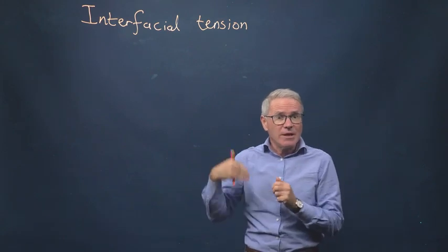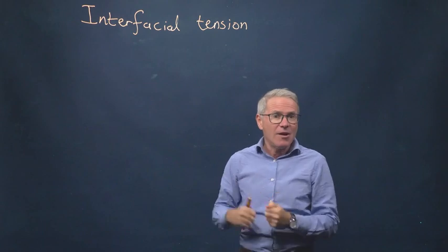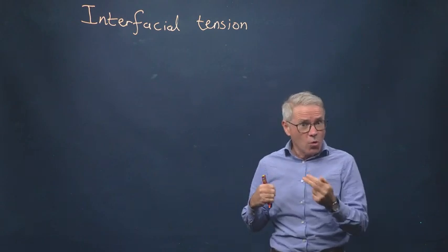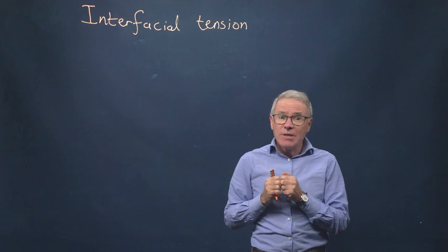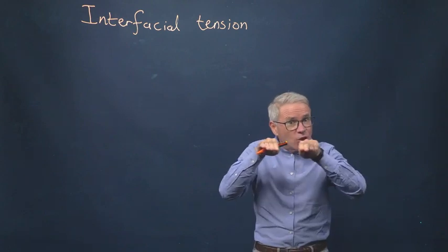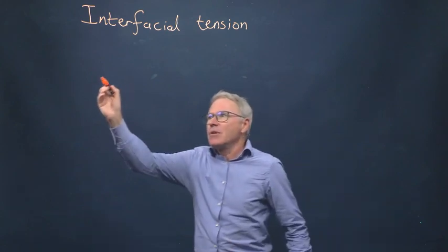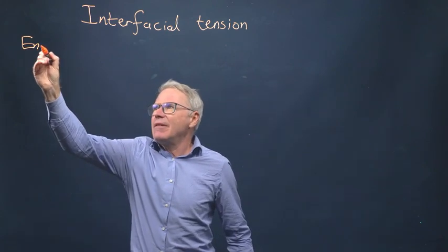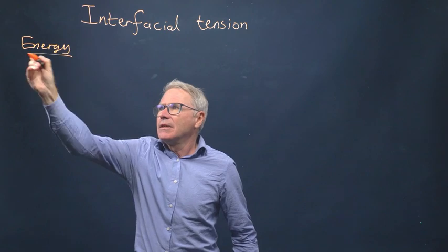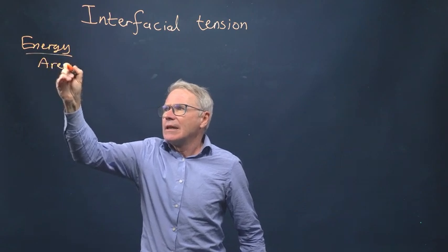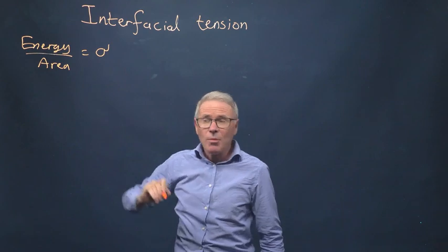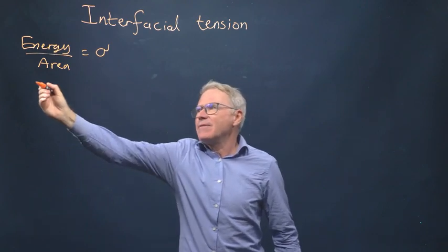Interfacial tension is the energy per unit area between two phases. So imagine between water and air, or between oil and water. It can also be the energy per unit area between a solid surface and a liquid. So it's the energy per unit area, given the symbol sigma normally, and this is of an interface.